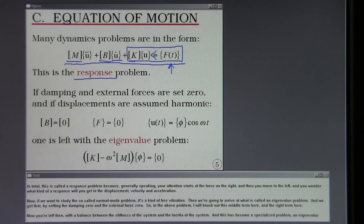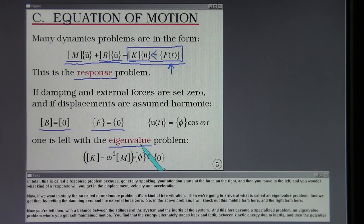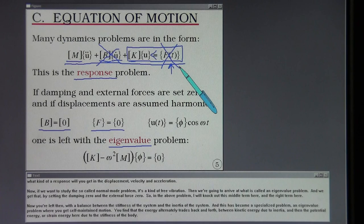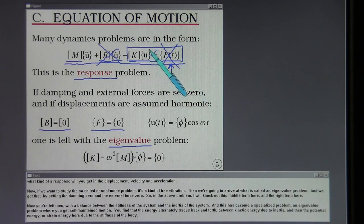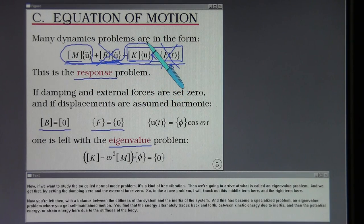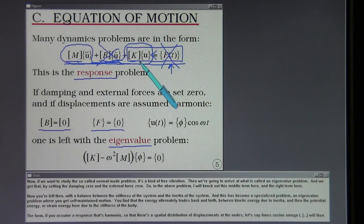If we want to study the so-called normal mode problem, it's a kind of free vibration, then we're going to arrive at what is called an eigenvalue problem. We get that by setting the damping zero and the external force zero. You're left with a balance between the stiffness of the system and the inertia of the system. This has become a specialized problem, an eigenvalue problem, where you get self-maintained motion. You'll find that the energy alternately trades back and forth between kinetic energy due to inertia and then the potential energy or strain energy due to the stiffness of the body.